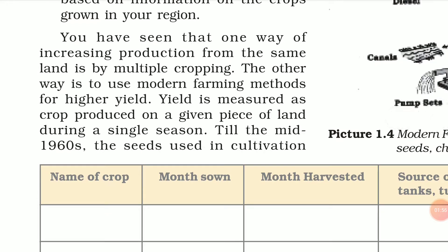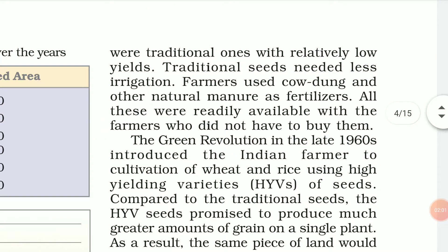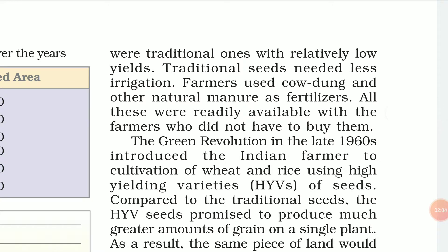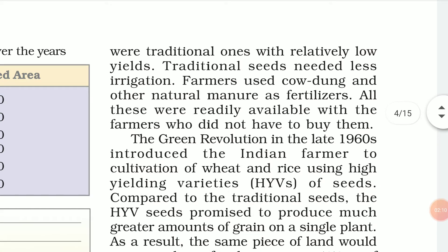Till the mid-1960s, the seeds used in cultivation were traditional ones with relatively low yield. Traditional seeds needed less irrigation. Farmers used cow dung and other natural manure as fertilizers. These fertilizers — like cow dung and humus — were readily available with farmers without needing to buy them.